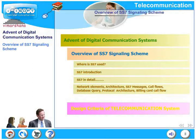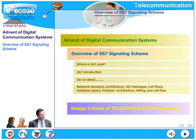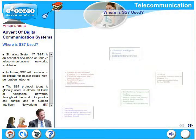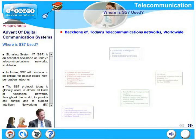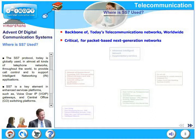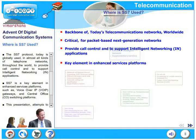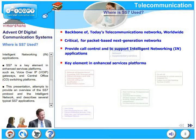After that we will briefly look at design criteria for a typical telecommunication system. SS7 is an essential backbone of today's communication networks worldwide. In future, SS7 will continue to be critical for packet-based next generation networks also. The SS7 protocol today is globally used in almost all kinds of telephone networks throughout the world to provide call control and to support intelligent networking applications. SS7 is a key element in enhanced services platforms such as voice over IP and central office switching platforms.